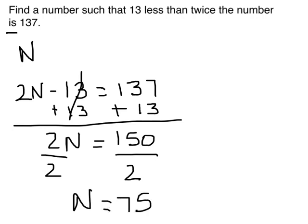So let's put this in and see if it really does work. 13 less than twice the number. Twice 75 is 150. And 150 minus 13 is indeed 137. So it does work. Alright, go to the next one.